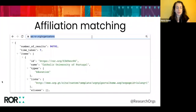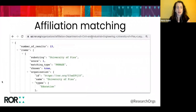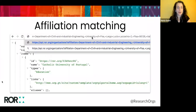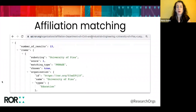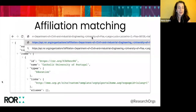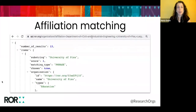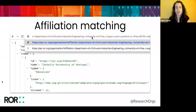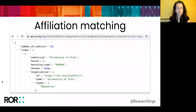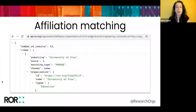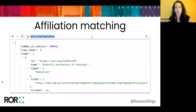We have an affiliation matching function in the ROR API that allows you to feed it a free text affiliation string and have it matched to the corresponding ROR ID. This is something that a number of ROR users have asked about because they might have a large amount of legacy content with affiliation strings and they want to retroactively map those affiliations to consistent ROR IDs. All of the code and documentation for these tools and for the ROR API is available on the ROR GitHub and we'll have links available toward the end.